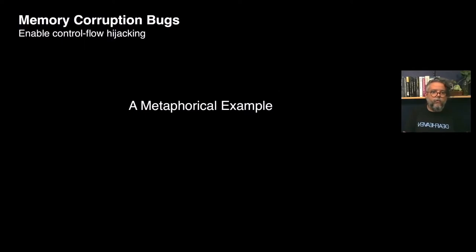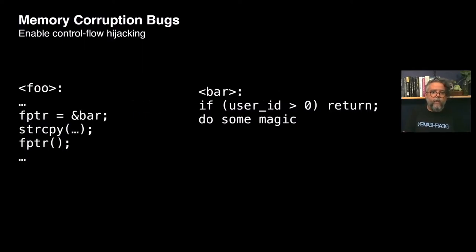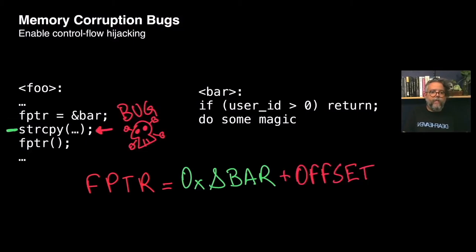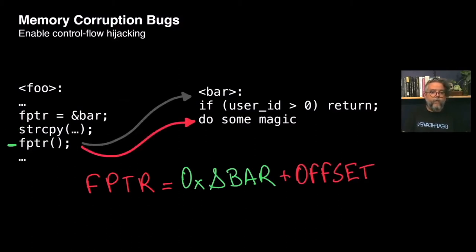Let's start our talk with a metaphorical example. Imagine you have a function foo indirectly calling a function bar — this should be your control flow. Yet when you start executing, fbtr, which is a function pointer, is assigned the address of bar. Then a memory unsafe function is executed, allowing a hacker to overwrite the contents of fbtr with the address of bar incremented with an offset. Then fbtr is invoked, and the control flow goes directly to the middle of function bar, skipping an important user ID check that should have been executed.